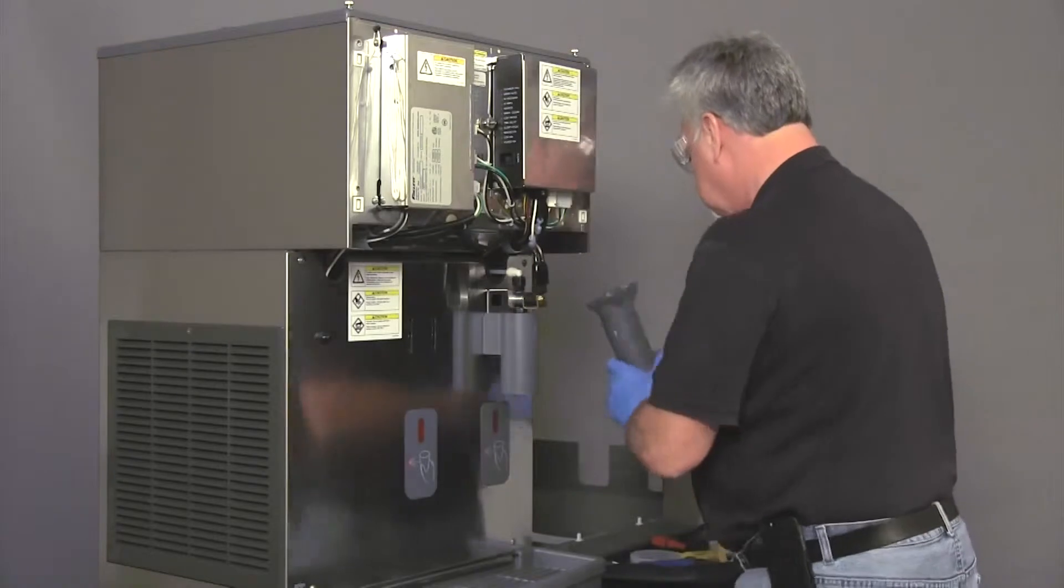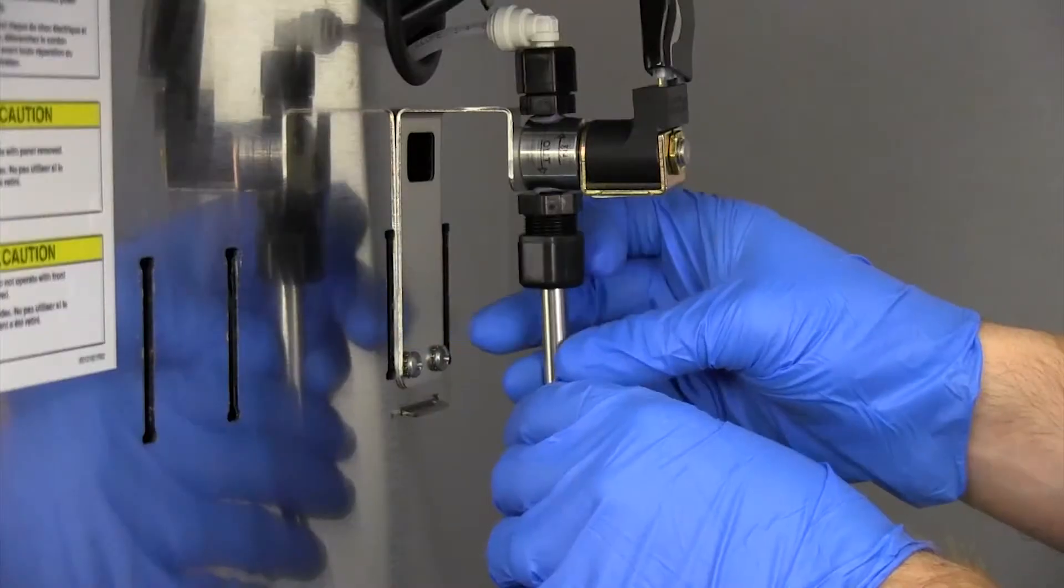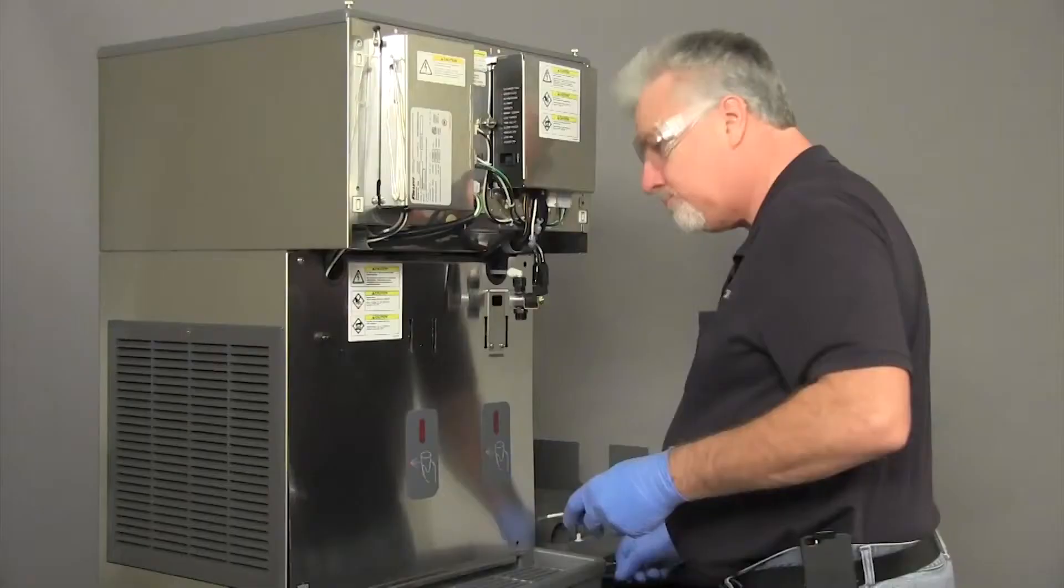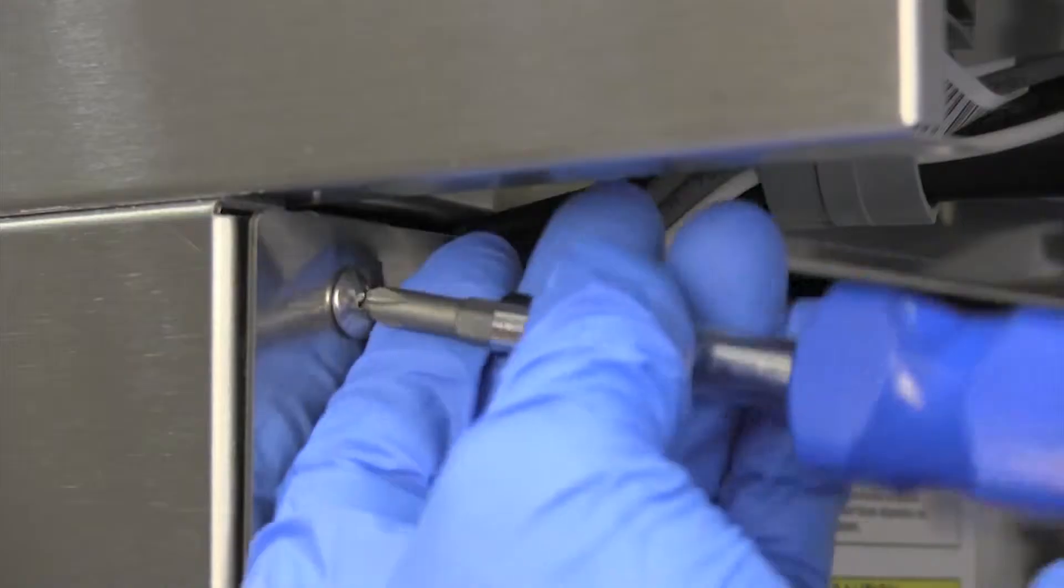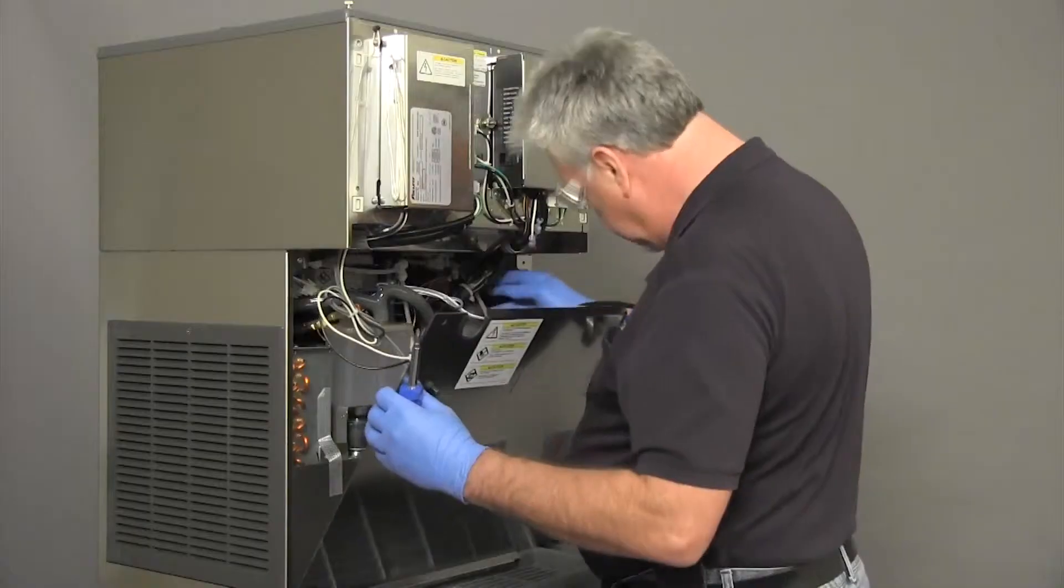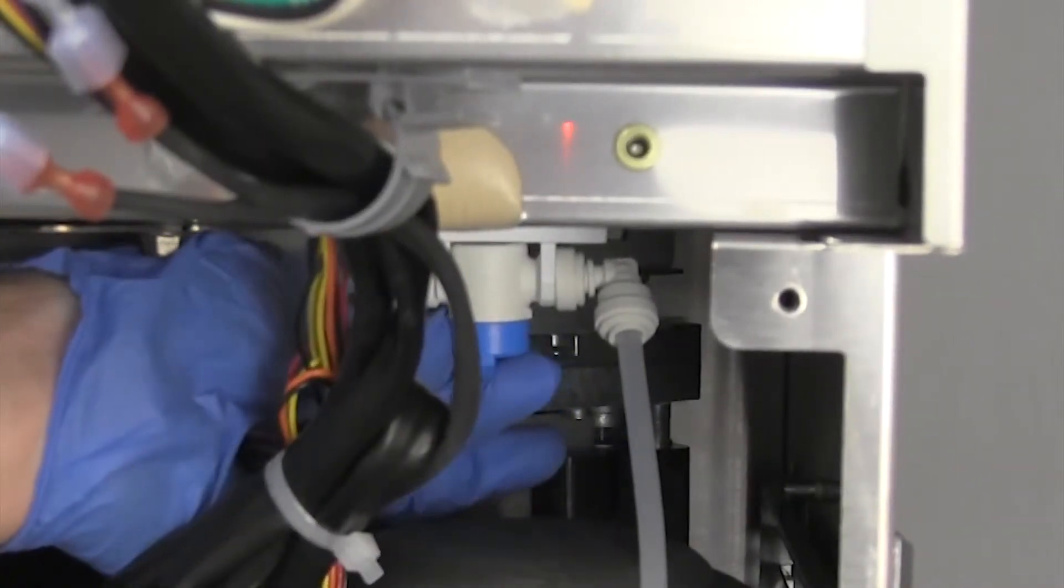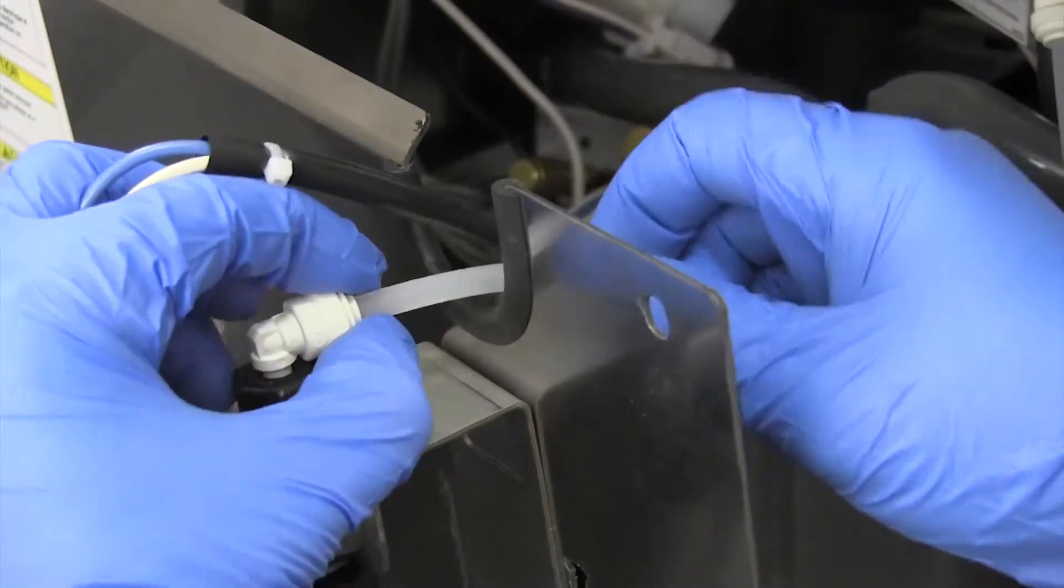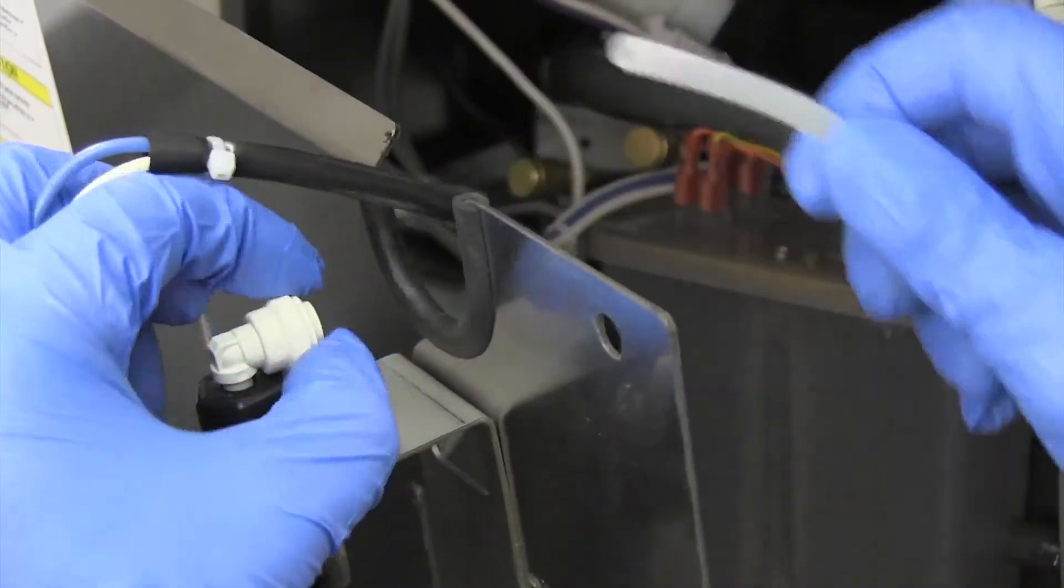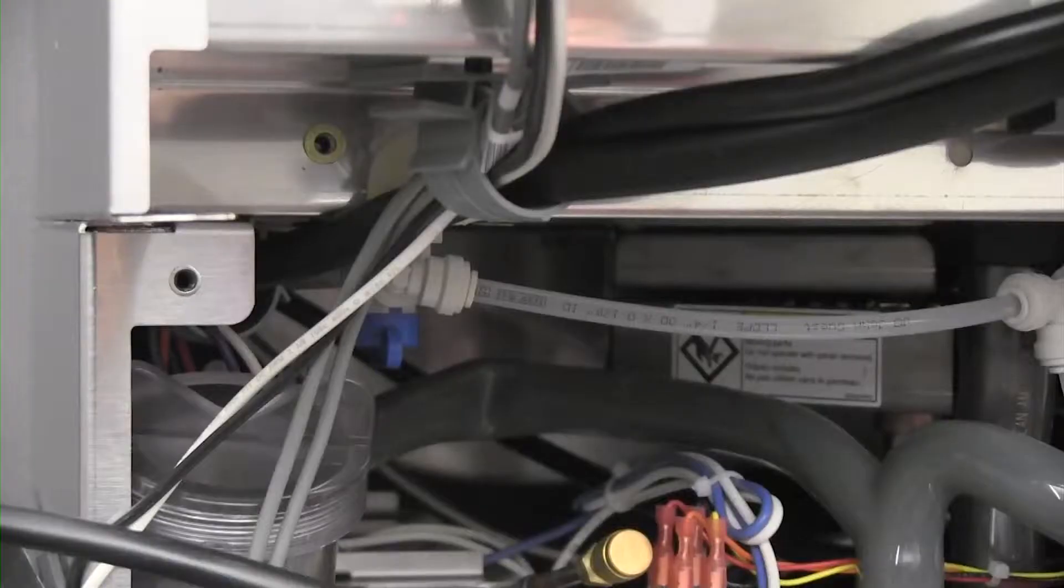Remove the dispense chutes, the water dispense tube, and then the splash panel by removing the screws found at each corner. The splash panel can be moved out of the way by turning off the water feed on the right side and disconnecting the water line from the water dispense solenoid. The water valve on the left must remain open for the cleaning and sanitizing of the evaporator.